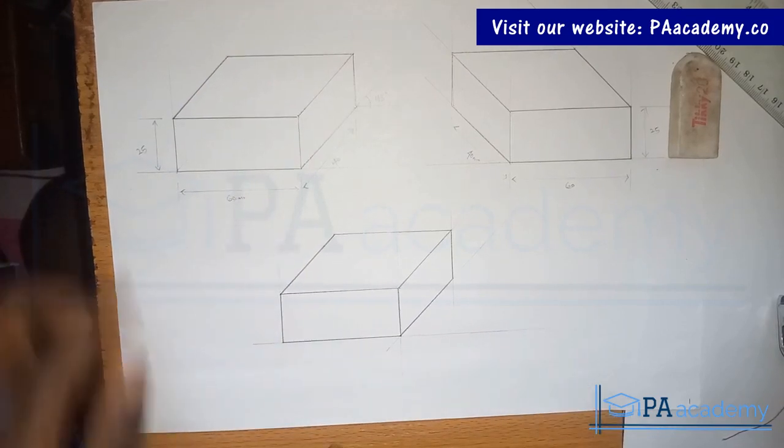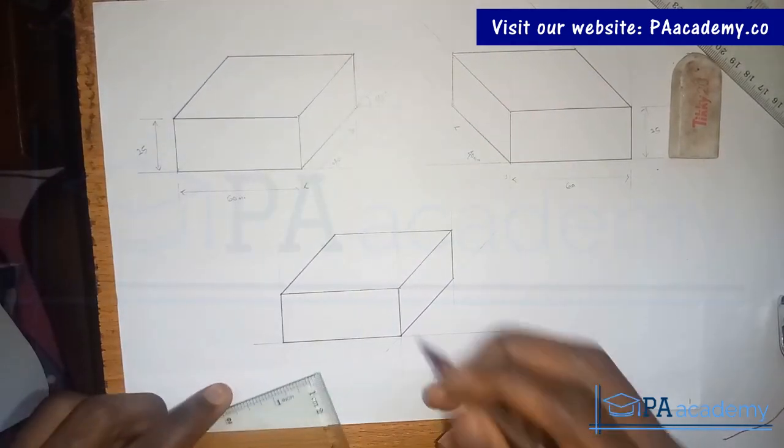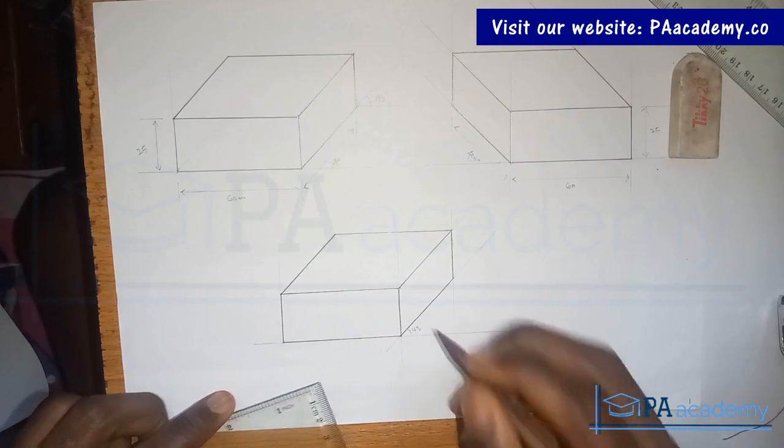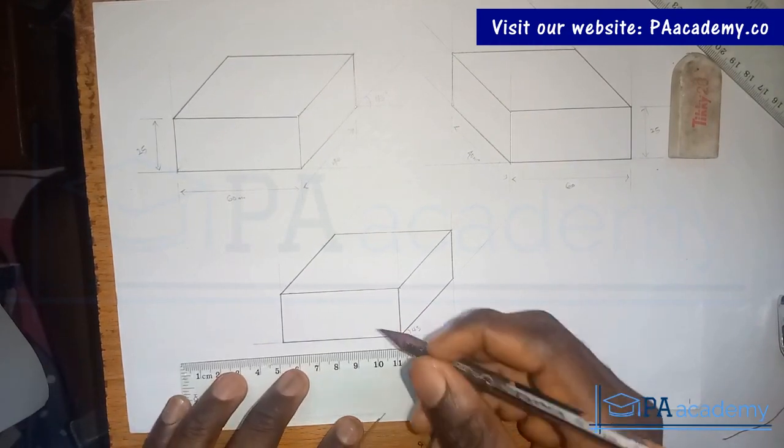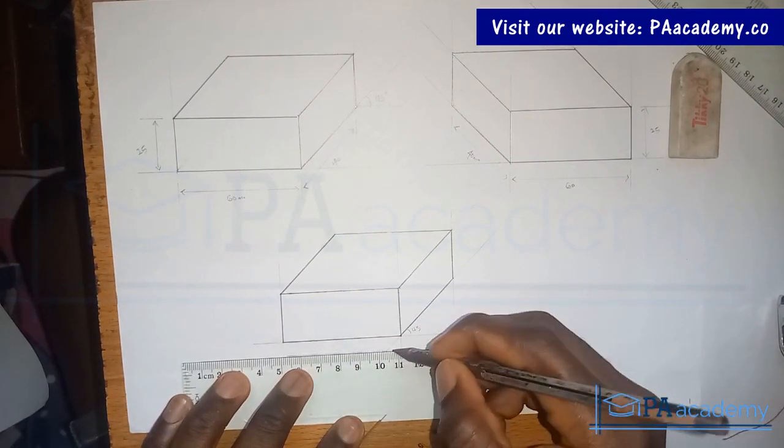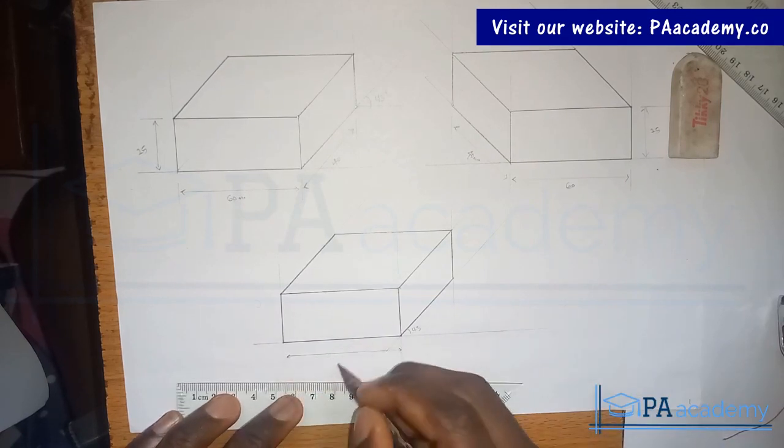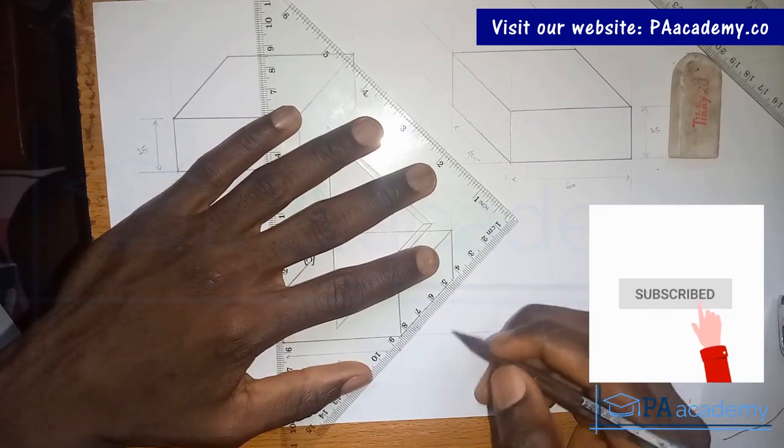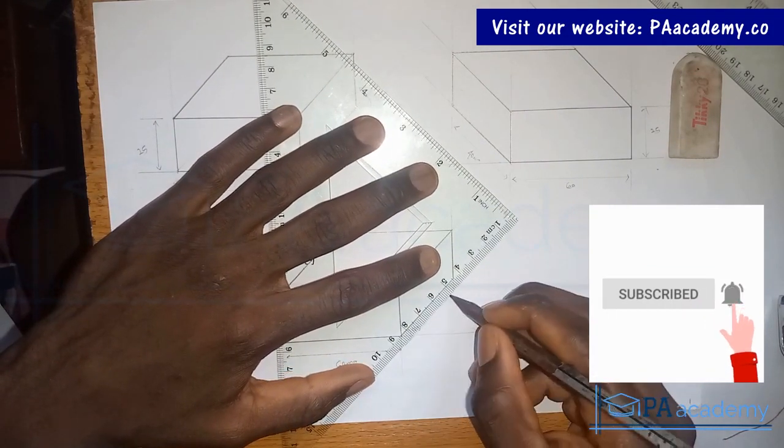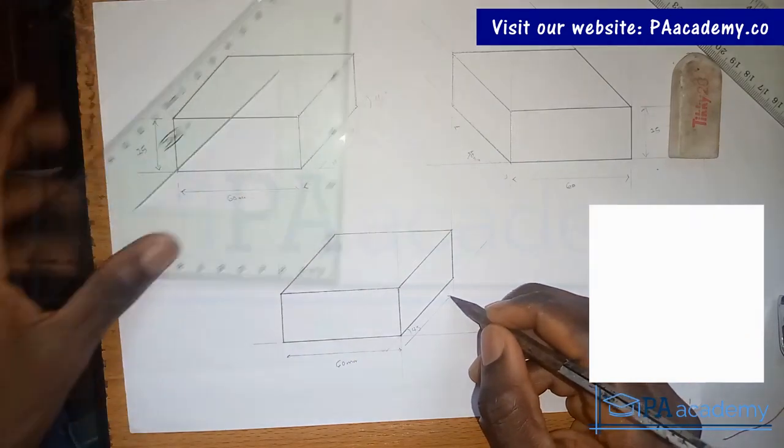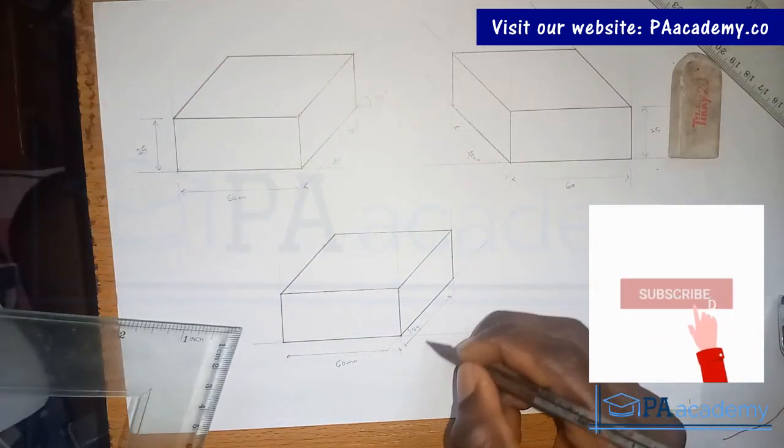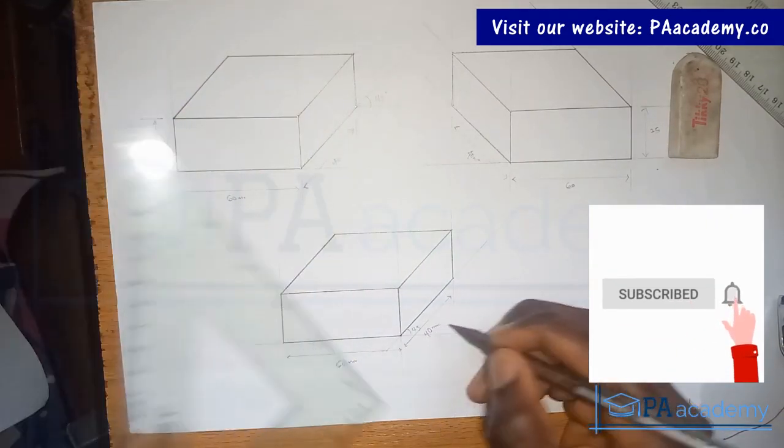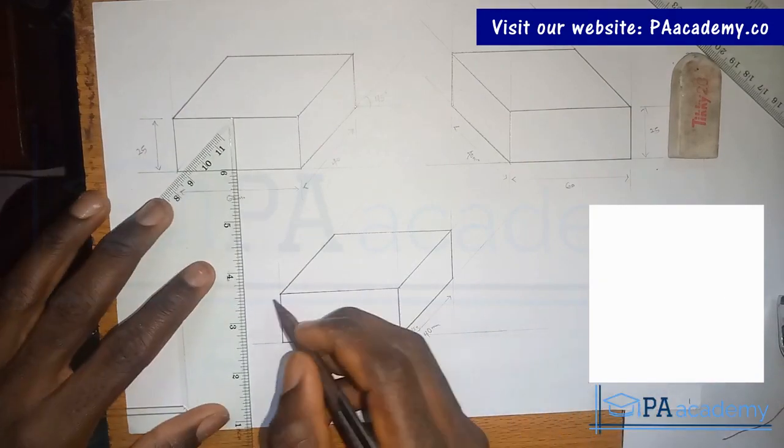So let me just go ahead and add the dimensions. So this is at an angle of 45 degrees. And then this is 60 mm. So from here to here is 60 mm. If you are finding value, please give it a thumbs up. If you have any question with any of this video, please just leave them in the comments section. I reply all questions or comments. So this is 40 mm. And then this is 2.5.